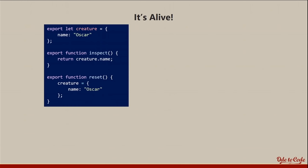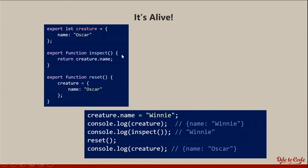These bindings are live. If you export an object literal with a name property, and someone changes a property on that object from another module, everyone sees that change — including the module itself. If you call a reset function that replaces the entire object reference, everyone will see the new object. So you can mutate properties on an exported object, but you cannot reassign the binding itself.